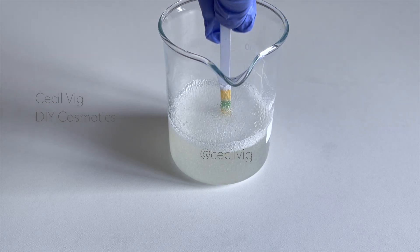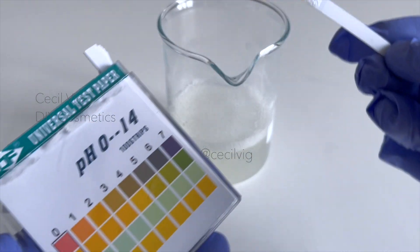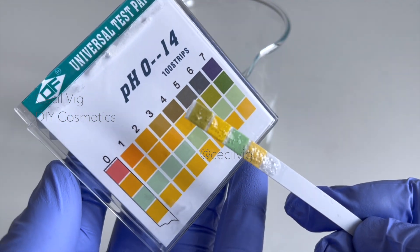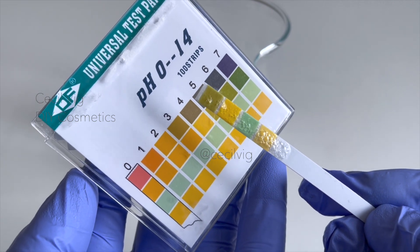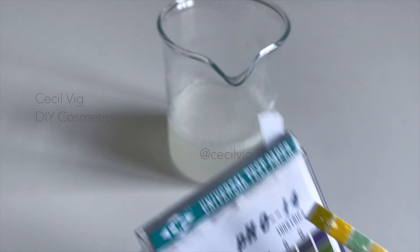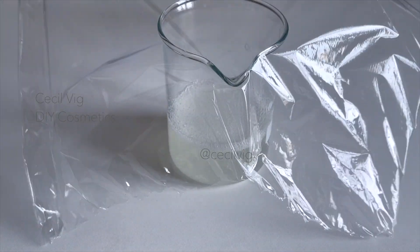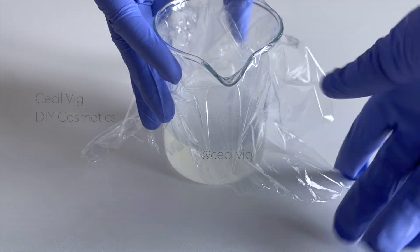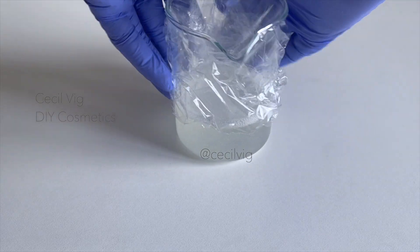After 10 seconds remove it and see where the pH is at. Four is perfect, no adjustments are needed. Cover the beaker with the facial cleanser in it and set aside for about three hours or until the xanthan gum has completely dissolved.